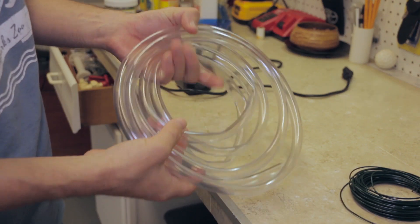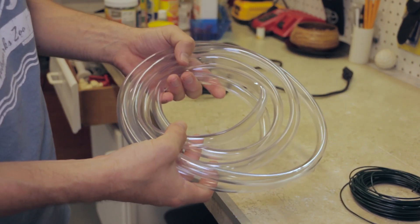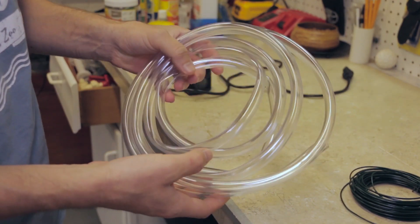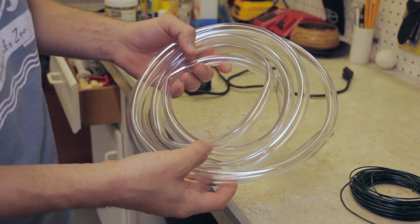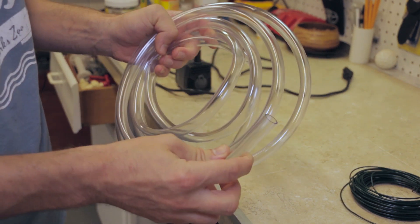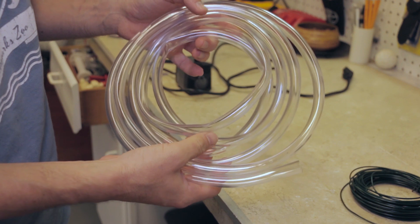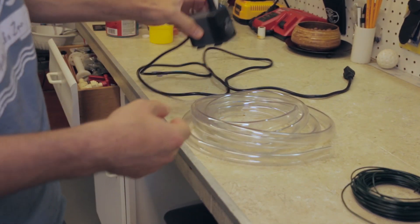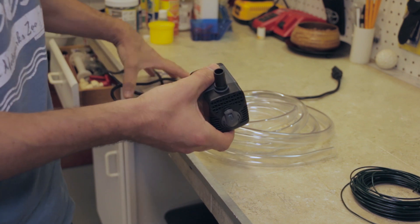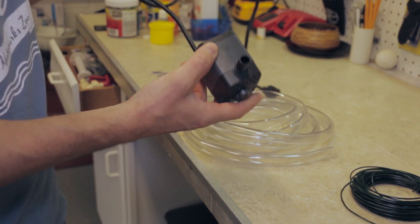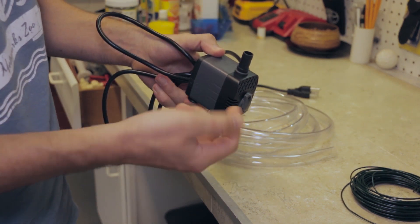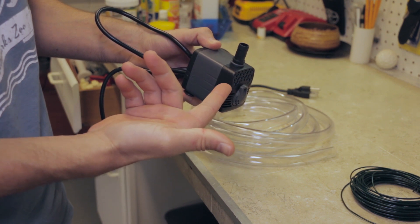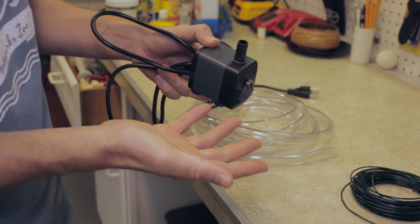This here is vinyl tubing. You can get this really cheap from anywhere - I think this was 20 feet for about four bucks. This is half inch, but the size doesn't matter as long as it fits your pump. The pump I'm using is a 210 gallon per hour little pump, and the link for this will be in the video description if you want this one in particular, but you can get any pump.